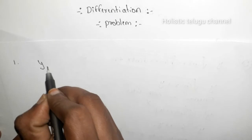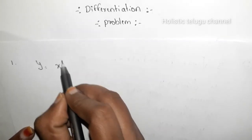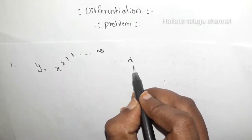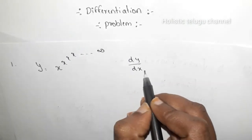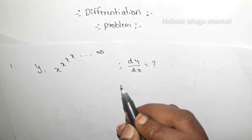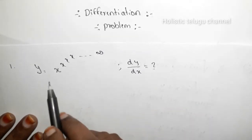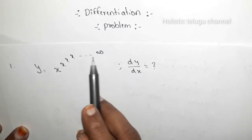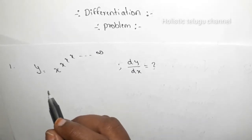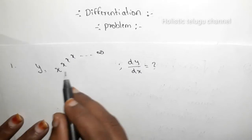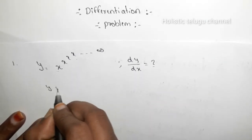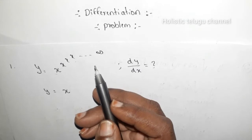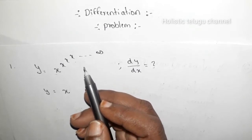The question is: y = x^x^x^x^... and so on to infinity. We need to find dy/dx. The key step is that since the exponent repeats to infinity, the exponent itself is also y. So we can write y = x^y.